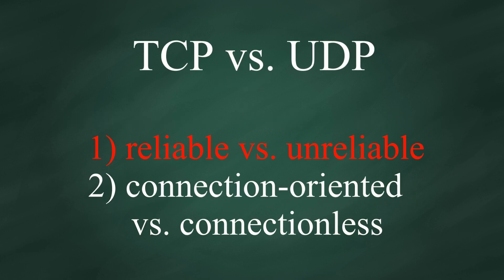First, reliability. TCP is a reliable transmission protocol, while UDP is not. When TCP delivers data segments to its destination, the protocol makes sure that each segment is received, no error occurs, and all segments are put together in the correct order.